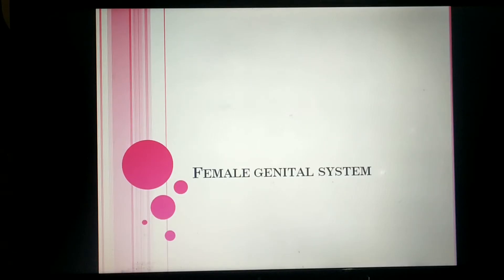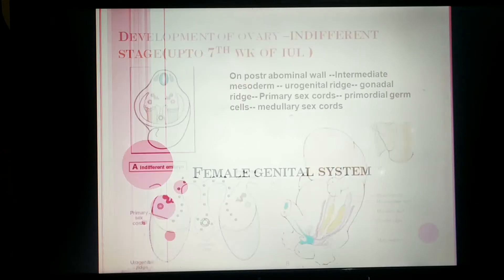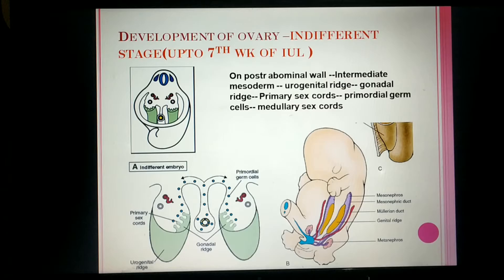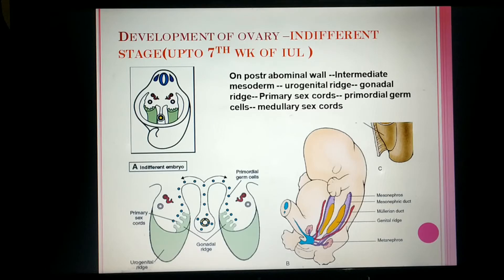Good morning. Today the topic of the class is development of the female genital system. First we will discuss development of the ovary. The ovary is the female gonad because germ cells are produced here. As discussed in the last class, up to the 7th week of intrauterine life, development of the gonad is the same in males and females, so we cannot differentiate whether it is an ovary or testes. That is why this stage is called the indifferent stage of gonad development.